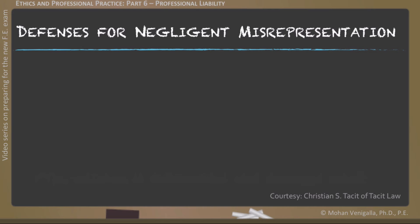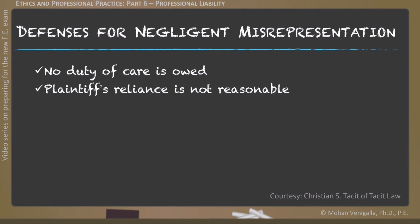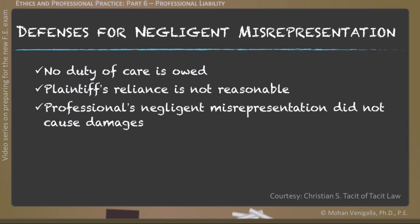Defenses to claims for negligent misrepresentation are similar to defenses against negligence in general. First, no duty of care is owed. Second, the plaintiff's reliance is not reasonable — for example, the representation was part of a discussion and not a formal opinion, or the professional limited liability through a disclaimer clause. Third, the professional negligent misrepresentation did not cause any damages. And lastly, the limitation period has expired. In all these cases, there are solid defenses for negligent misrepresentation claims.